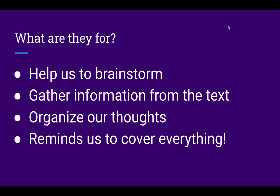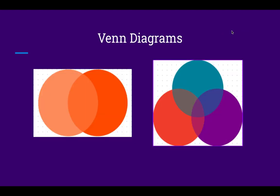The first one that's very common and you may already be exposed to is a Venn diagram. A Venn diagram looks like these two examples here. On the left-hand side you have a traditional Venn diagram with two bubbles that converge in the middle, and on the right side you have a more complex Venn diagram with three bubbles that converge toward the center. You would use these to compare and contrast either passages or topics — similarities go in the middle and differences go on either side.